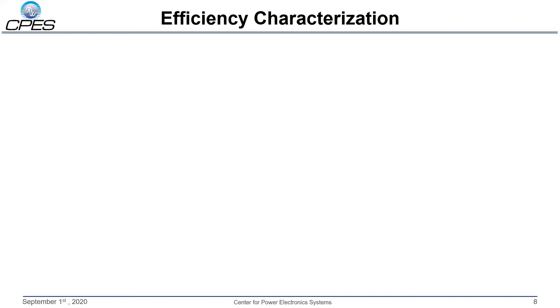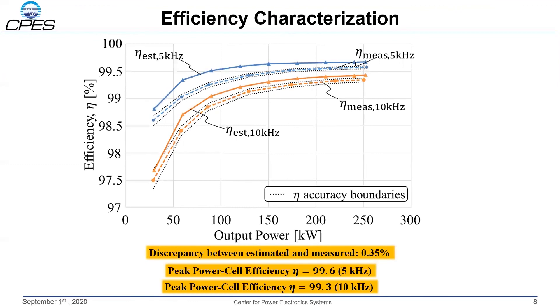Lastly, power cell efficiency will be assessed. For detailed measurement process, probes and calibrations, please refer to the full paper. Efficiency is measured at 6 kV for 5 and 10 kHz switching frequency after thermal steady state is reached. The measured efficiency is close to the estimated value based on the loss model, with maximum discrepancies on the order of 0.35%. Maximum power cell efficiency is 99.6% for full load at 5 kHz, while at light load it is 98.6%. With efficiency characterization finalized, the assessment of the power cell is finished and the power cell design targets are met.